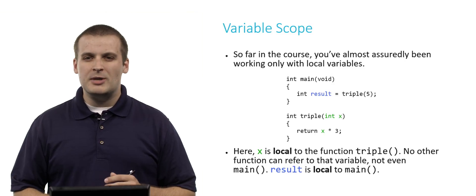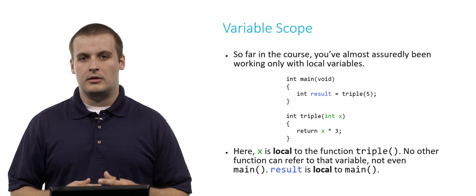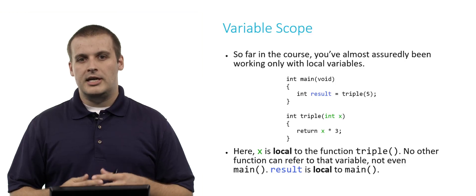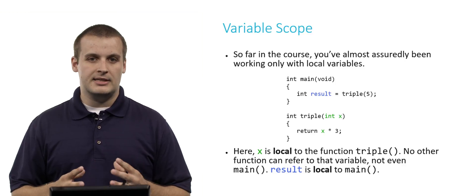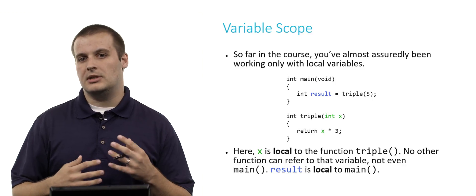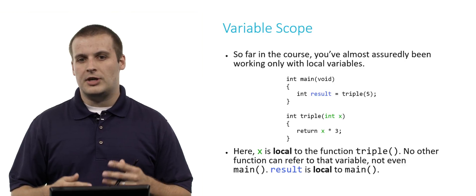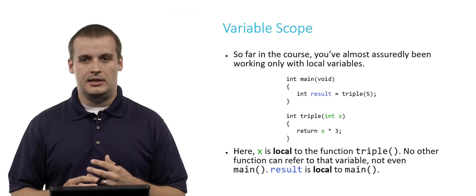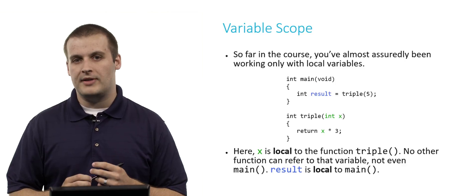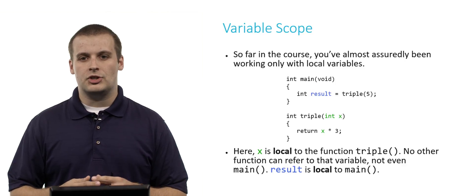So far in the course, you've pretty much been working exclusively with local variables. Here's an example of a very simple main function and a very simple additional function that we've written. In this case, x, which I've colored green just to highlight the locality or the scope of that variable, is local to the function triple.